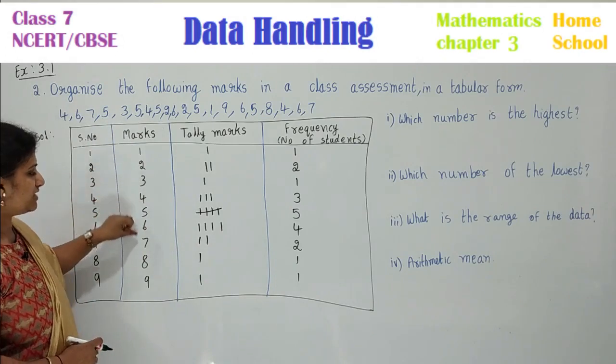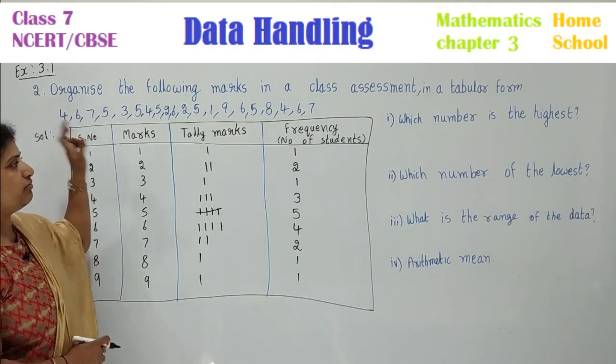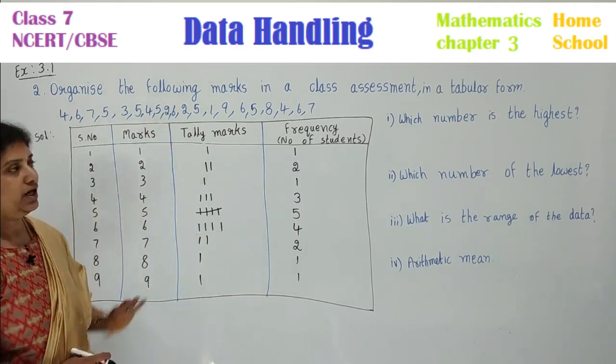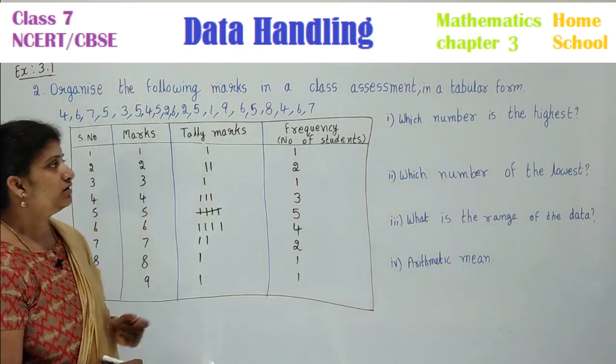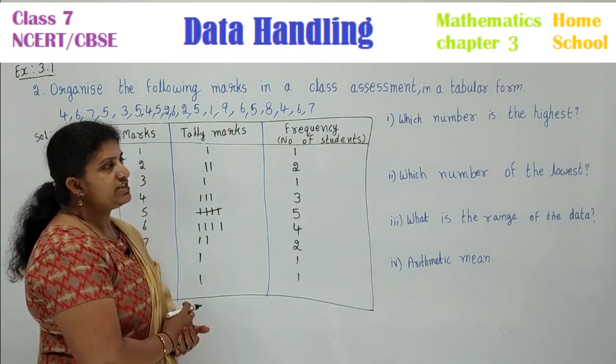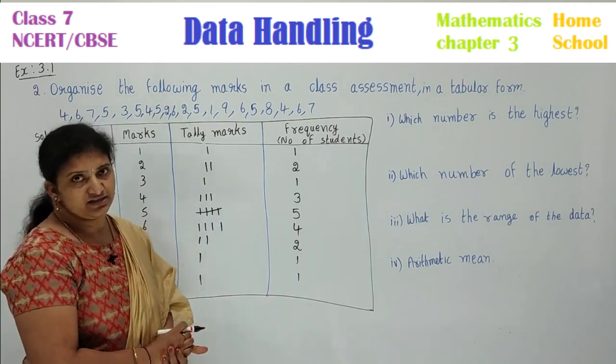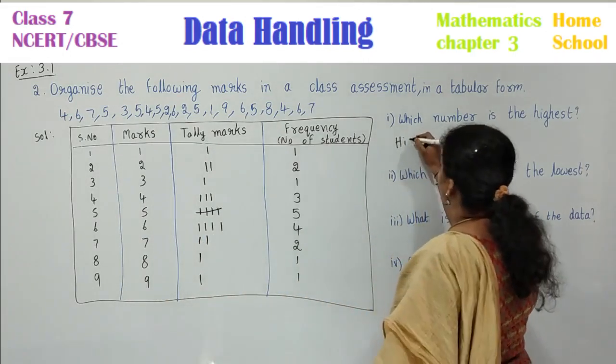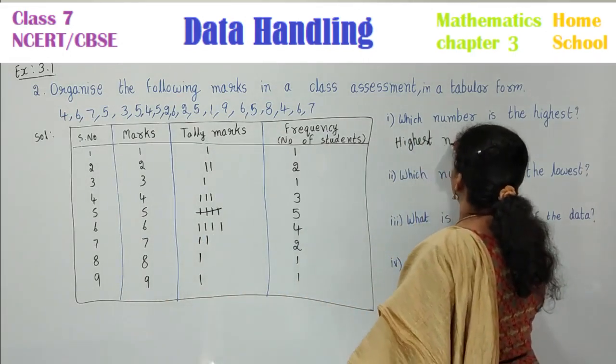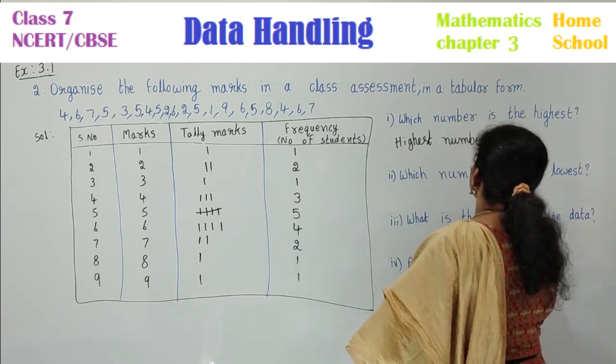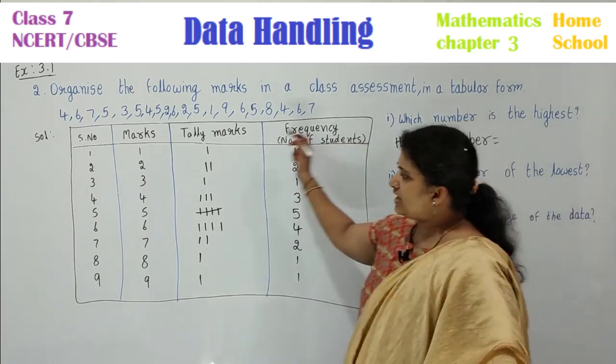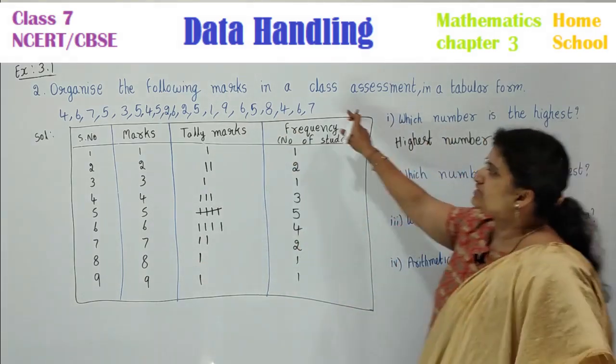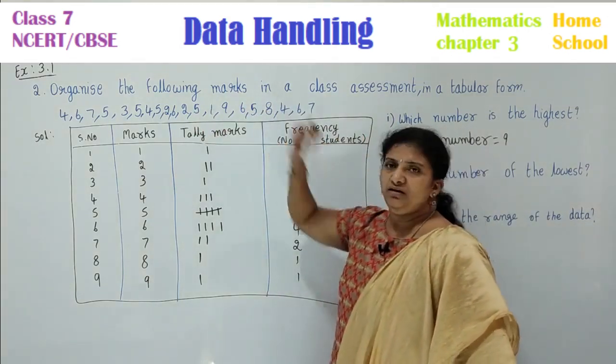I have written almost all the values from the given data. I have taken 1, 2, 3, 4, 5, 6, 7, 8, 9 marks here. 1 mark, how many people scored? 2 mark, I have seen. Observe here and I tried to frame in a table. Now, let us answer those questions. First question: which number is the highest? The highest number is equal to 9.